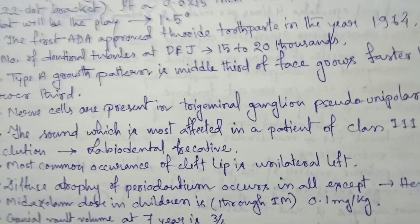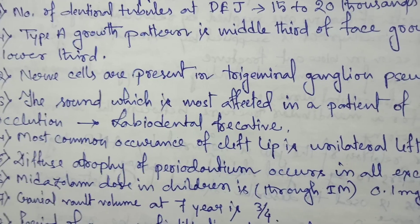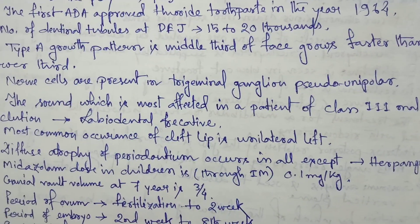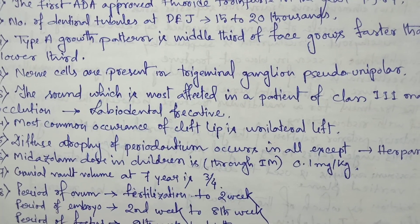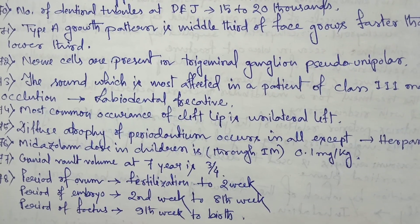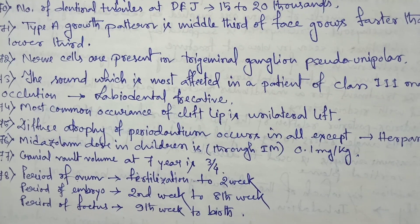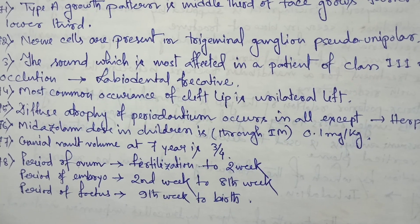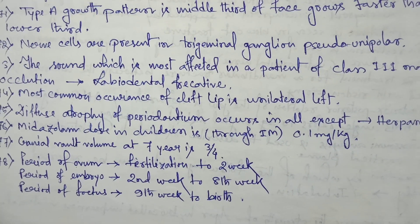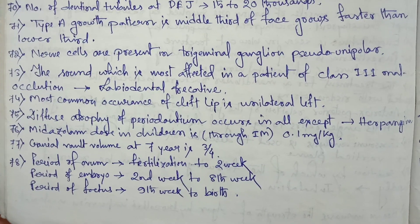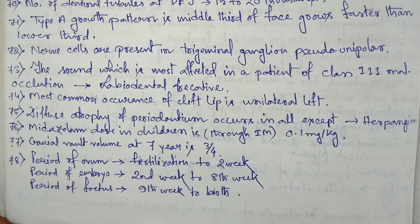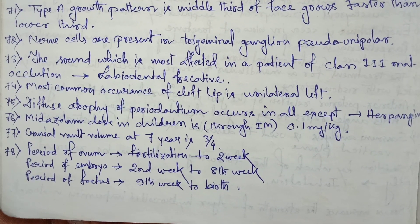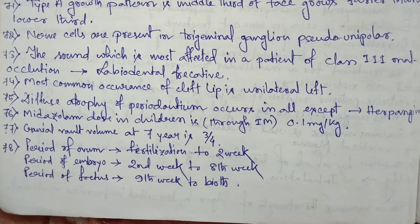The sound most affected in a patient with class III malocclusion is the labiodental fricative. Most common occurrence of cleft lip is unilateral left. Diffuse atrophy of periodontium occurs in all except herpangina.